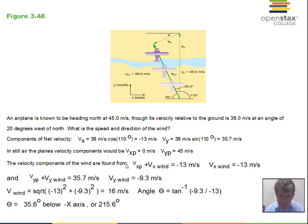Since x for the plane is zero, the velocity in the x direction for the wind is -13 meters per second. For y: the y component of the plane's velocity plus the y component of the wind's velocity gives us 35.7, the total velocity in the y direction. We have 45 meters per second for the y component of the plane. Subtracting 45 from both sides, the y component of the wind is -9.3.